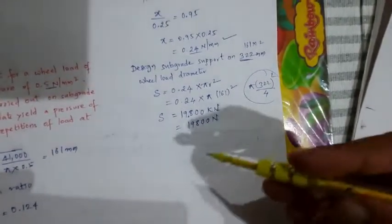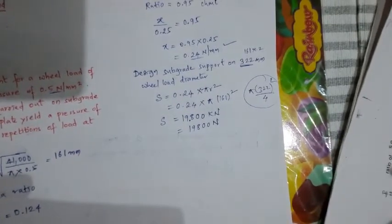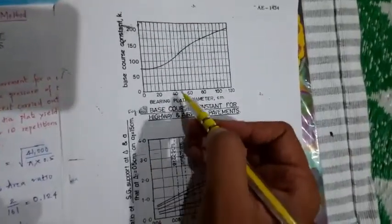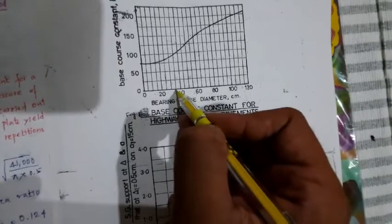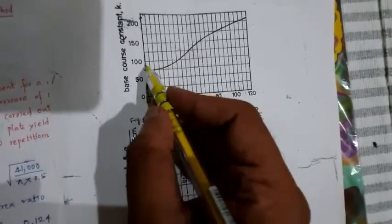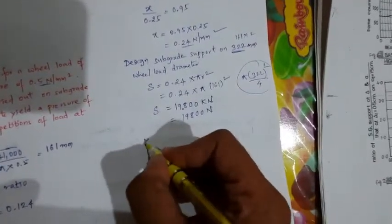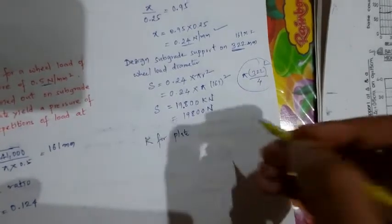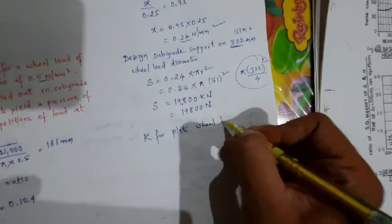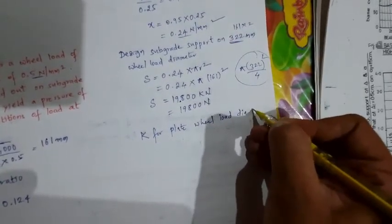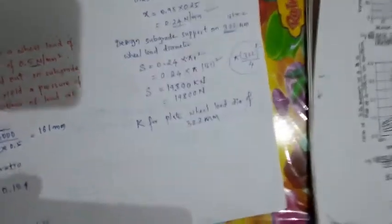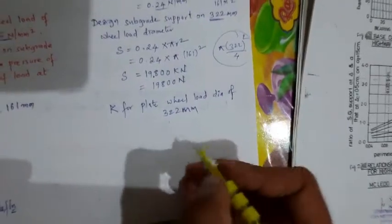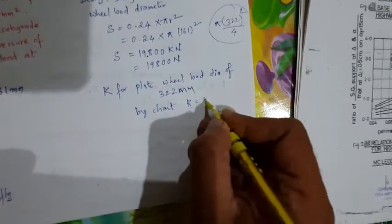Then you're going to find the K value from the graph. Here you have the bearing plate diameters 322. This is 20, 40, means 30 there. After that it's going to be somewhere here, 322, it's going to be 35. So here if I intersect here, I'm going to get some K value. This K value I will take as K for plate having wheel load diameter of 322 mm, that is 32.2 centimeter. So by the chart you get K value as 90.